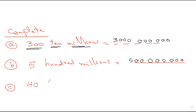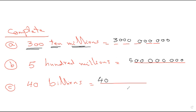Forty billion equals what? Forty plus nine zeros for billion — so 40,000,000,000. Nine zeros. Good.